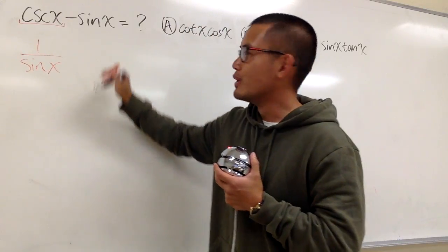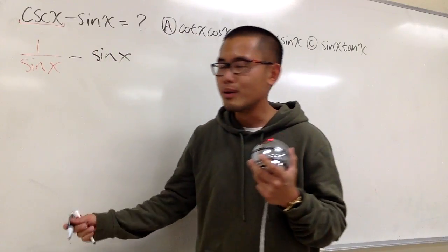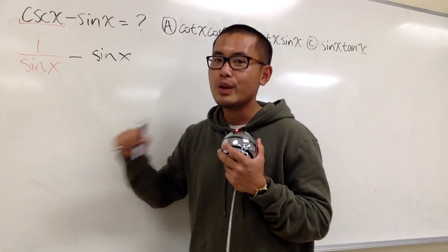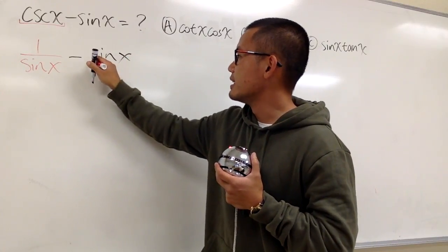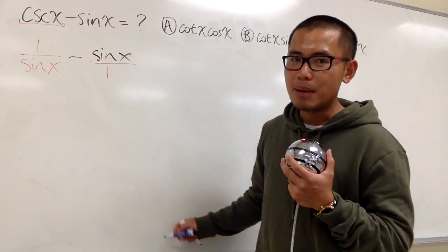And then we'll continue. We'll have the minus, and then we'll have this sin x. And now, how can we subtract fractions? Well, let's put down the sin x as sin x over 1, and we have to get the common denominator.